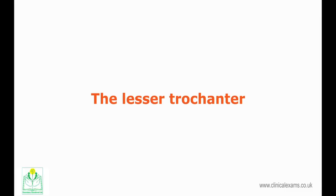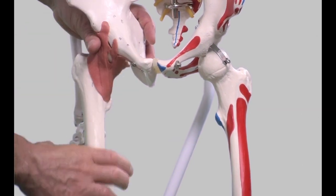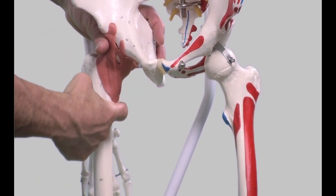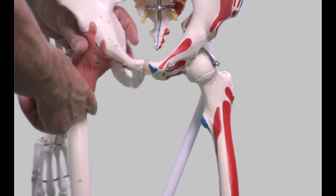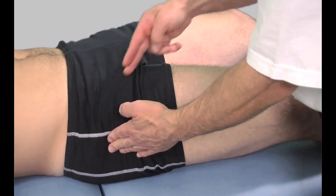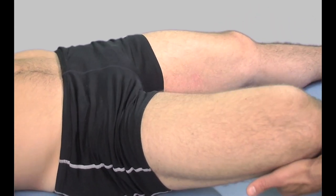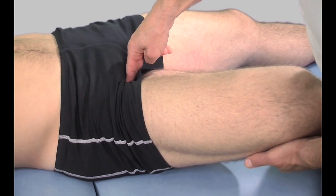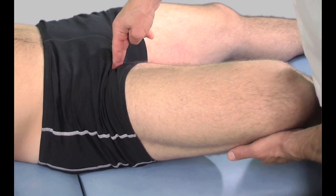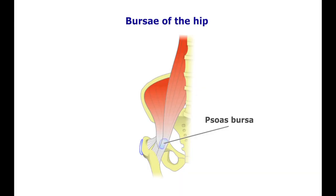The lesser trochanter may be palpated indirectly as it is shielded deep within the medial compartment of the thigh. It is inferior and medial to the greater trochanters. With the hip placed in slight flexion, abduction and external rotation, place progressive pressure with the tips of your fingers medially and inferiorly to the inguinal ligament. By moving the hips from passive flexion to extension, you may feel the resistance of the tensing iliopsoas tendon. If the bursa is inflamed, it will be tender.